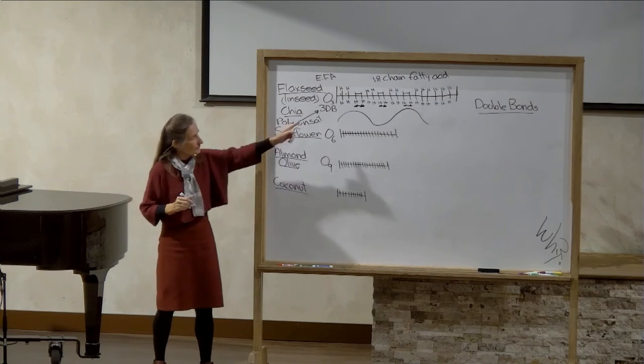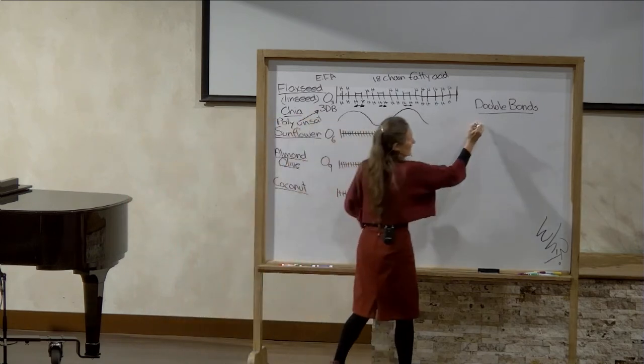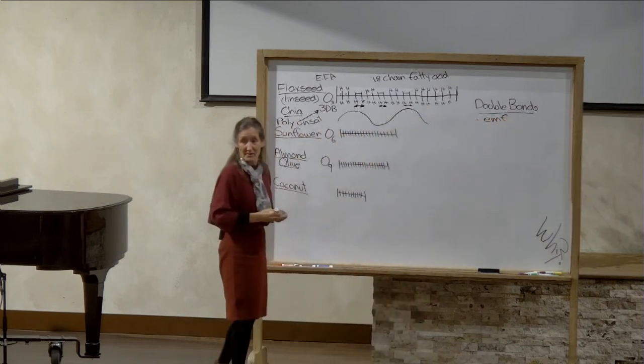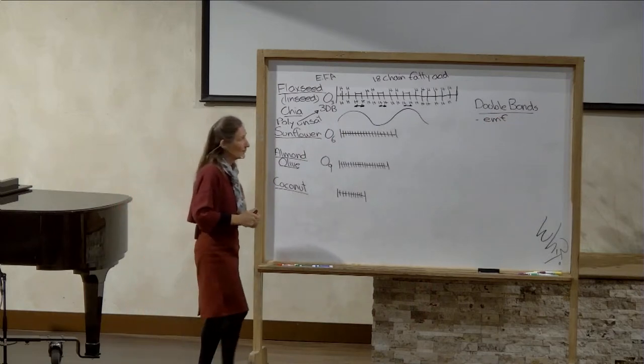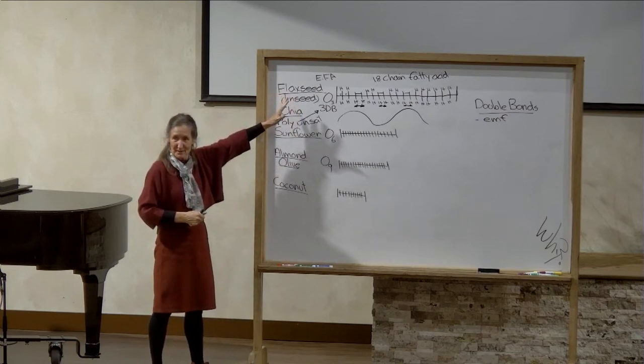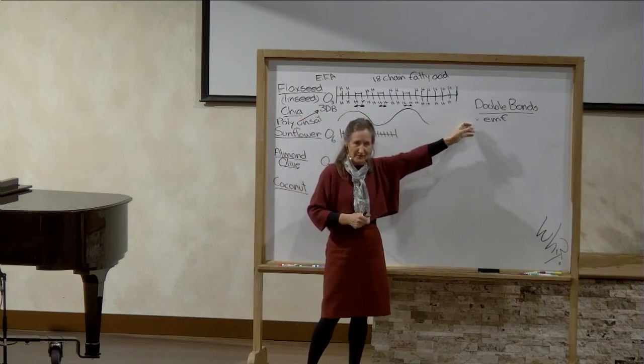This oil is called a polyunsaturated fatty acid. Poly meaning more than one double bond. Unsaturated because there are some empty spots on the fatty acid chain. Let's look at the effect of these double bonds on the body. They create an electromagnetic field, and that's important for us because we are electrical people. There's a spark of electricity in every cell in the body. When we're eating nice amounts of omega-3, it ensures our electromagnetic fields are running well.